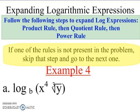The important note here is: if one of the rules is not present in the problem — in other words, if there's no multiplication happening, we don't do the product rule, we just skip it and go to the next rule. Product rule means multiplication is happening; quotient rule means division is going on; power rule means there are exponents. We only skip a rule if it is not there.